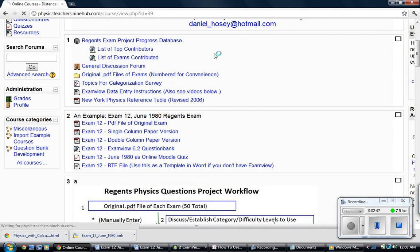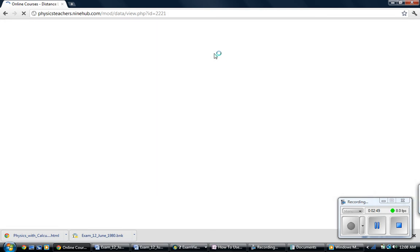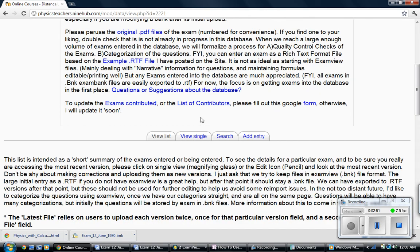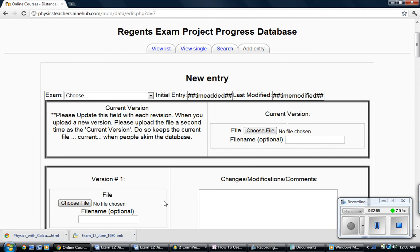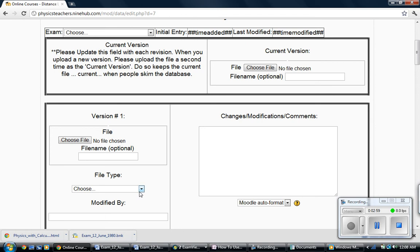And then what you'll do in the Regents database is you'll want to add an entry. And when you add the entry, it's obviously going to be version 1, which is really the only version that should be an RTF file. And just go ahead and label it as RTF.